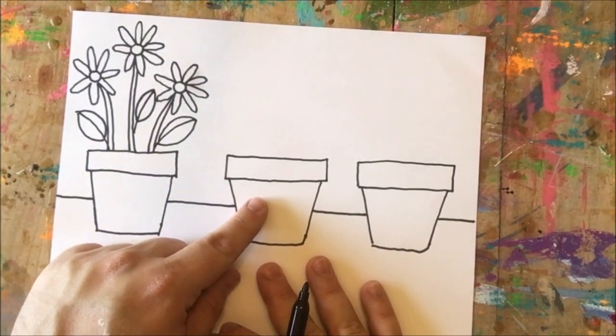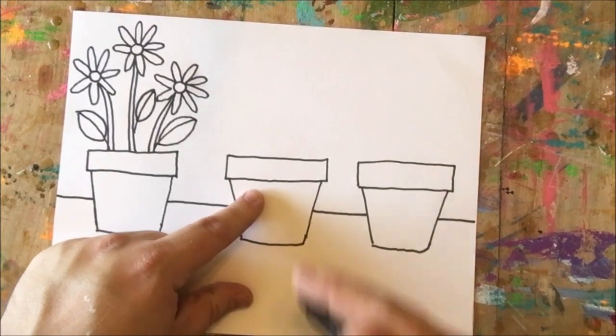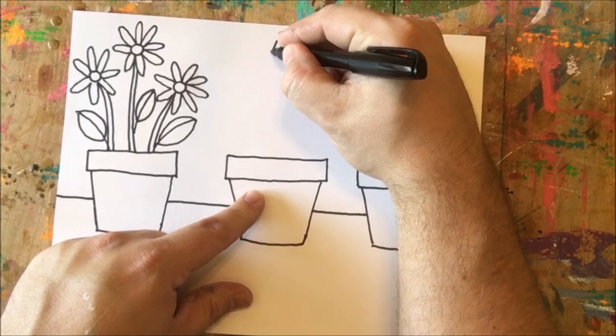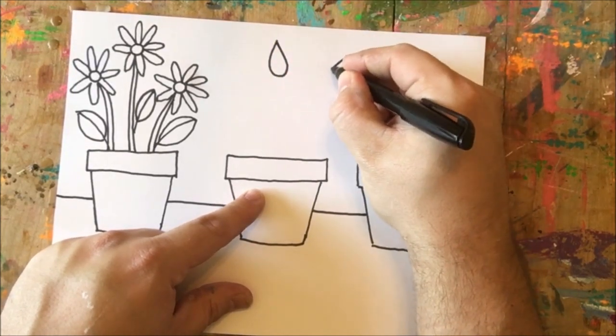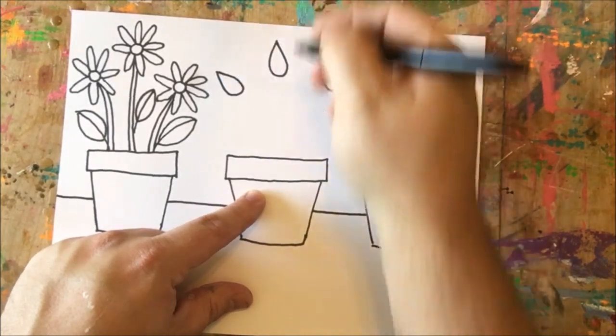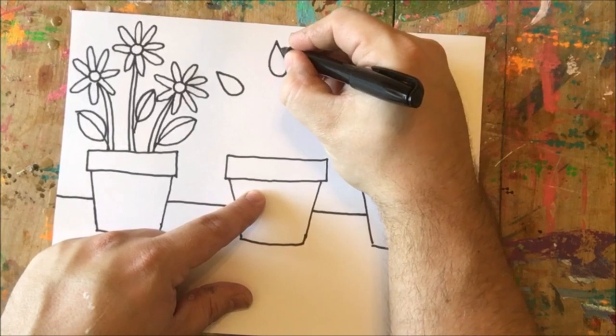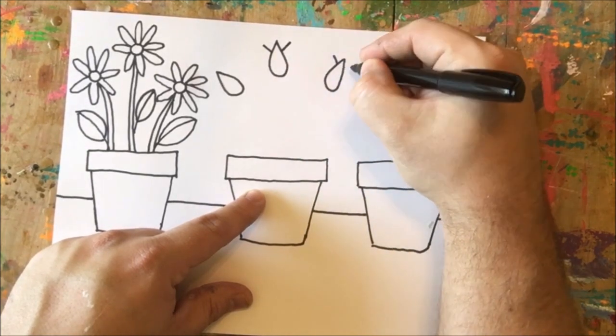In my second pot I'm gonna draw some tulips, and so to get started I'm going to draw a raindrop here, a raindrop here, and a raindrop here. On the sides of my raindrops I'm gonna add two diagonal lines just like that.